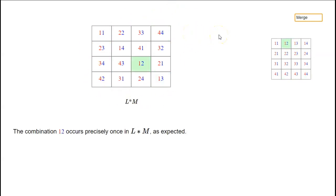And that, by definition, is what it means for L and M to be orthogonal: when we merge L and M to form L star M, every possible combination should occur precisely once.